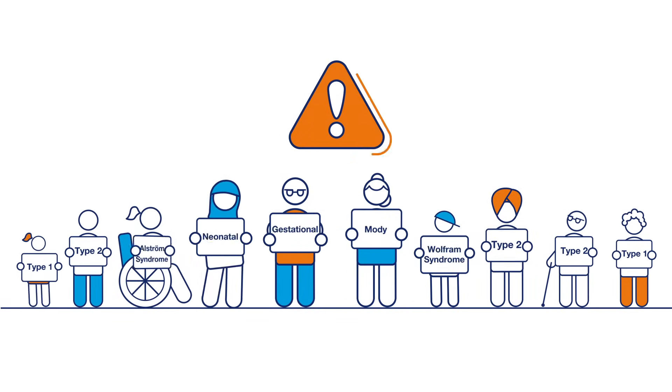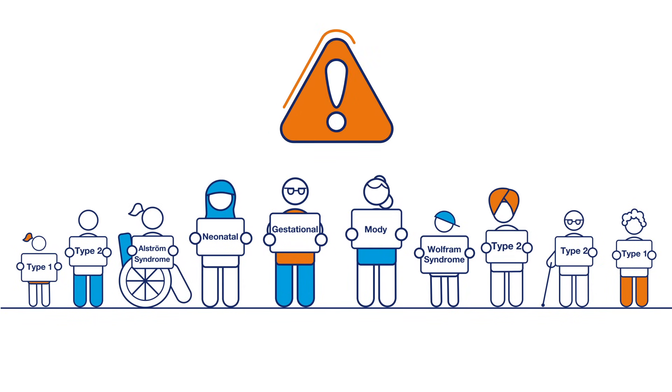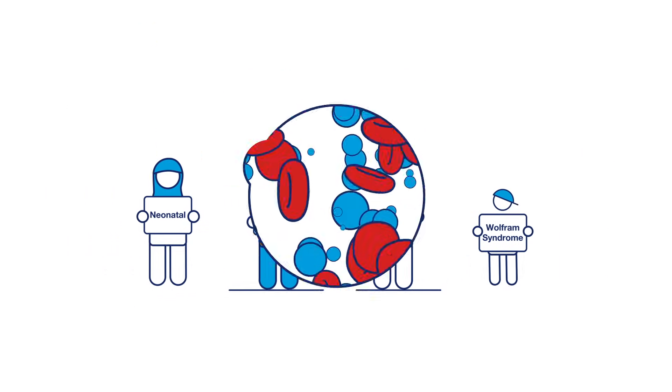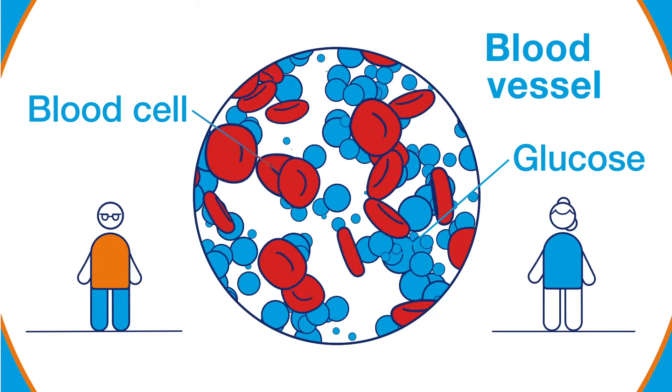There are some other rarer types of diabetes too. What all types of diabetes have in common is that they cause people to have too much glucose in their blood.